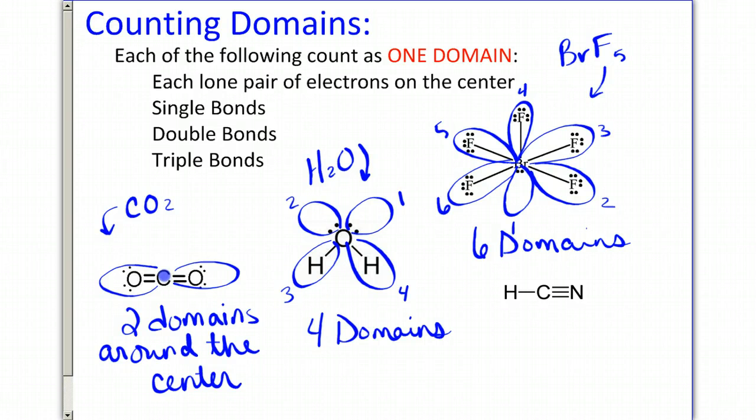The last one, which is HCN, hydrocyanic acid, that's this one. Around the carbon, we have one domain with the hydrogen, and we have a second domain with the nitrogen. Even though there's a triple bond there, it still only counts as one domain, giving me two domains total.